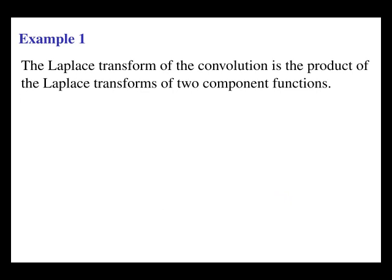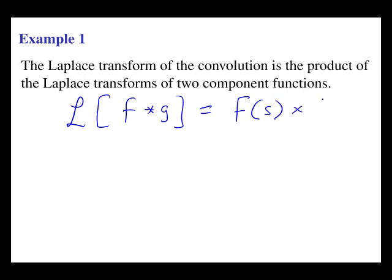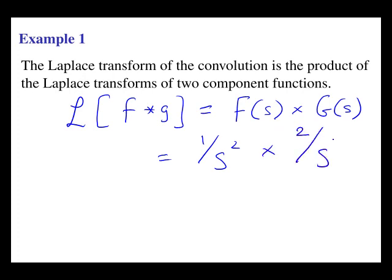Now the second step. The Laplace transform of the convolution is the product of the Laplace transforms of the two component functions. So we can say the following: the Laplace transform of f convolved with g equals the Laplace transform of f, which is denoted capital F, times the Laplace transform of g, which is denoted capital G. From the previous slide, the Laplace transform of f was 1 over s squared and the Laplace transform of g was 2 over s cubed. So the Laplace transform of the convolution is 2 divided by s to the power of 5.